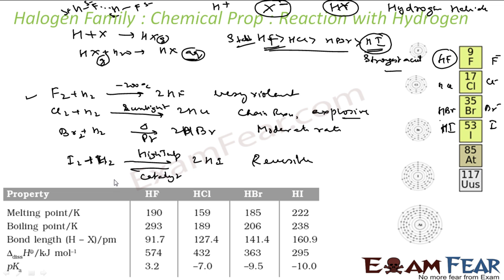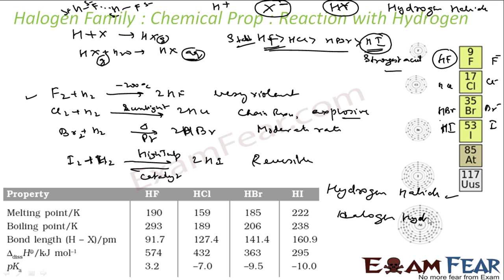Please note: the product is called hydrogen halide — not halogen hydride. So we say hydrogen chloride, hydrogen bromide, hydrogen iodide. The name is hydrogen halide.